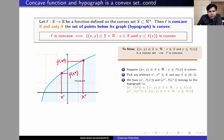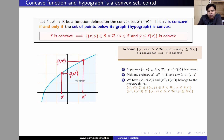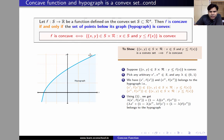So (x′, f(x′)) and (x″, f(x″)) both belong to the hypograph. Since both belong to the hypograph and the hypograph is a convex set by assumption, any convex combination of these two will also belong to the hypograph. So that means λ(x′, f(x′)) + (1−λ)(x″, f(x″)), which can be rewritten as (λx′ + (1−λ)x″, λf(x′) + (1−λ)f(x″)), belongs to the hypograph.